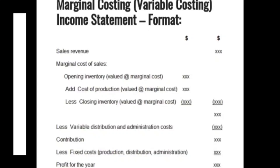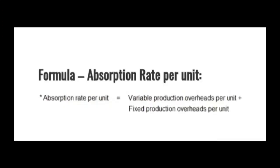Before looking at the absorption costing format, you need to know the absorption rate per unit. The absorption rate per unit equals variable production overheads plus fixed production overheads. By adding variable and fixed together you get the absorption rate per unit.